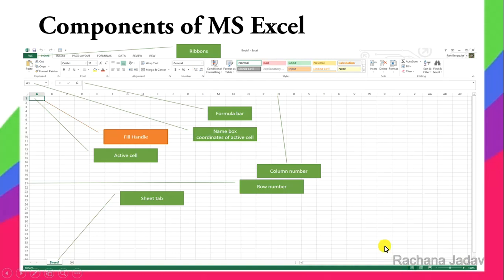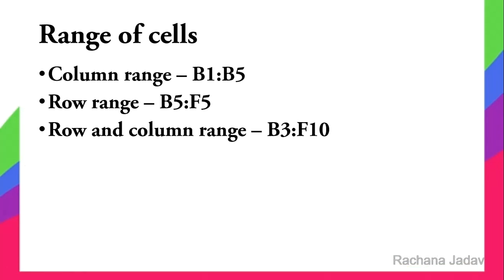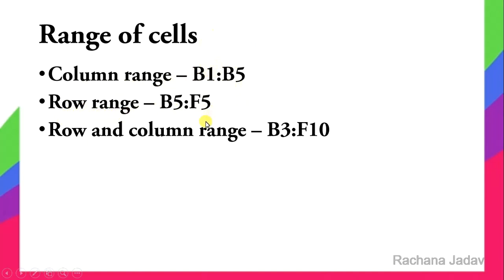Now let's see Range of Cells. A range means a group of cells which you have selected. It may be contiguous — selected together — or non-contiguous, where you press Control and select separate areas. For example, a column range like B1 to B5 is a contiguous range.